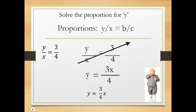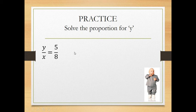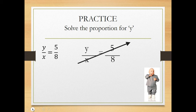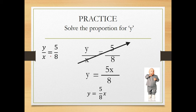Pause the video and see if you can solve this proportion for y. To solve it, just multiply both sides by x, or take the cross-product 5 times x, placing that in the numerator over 8. That's more commonly written as y = (5/8)x. It's as if you grabbed the x and multiplied it by 5/8, since y is already in the numerator.